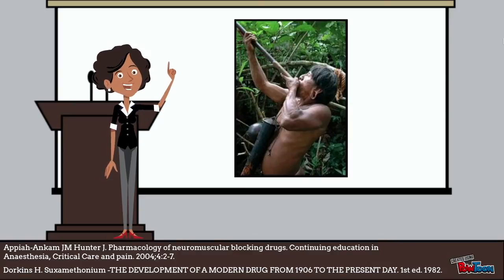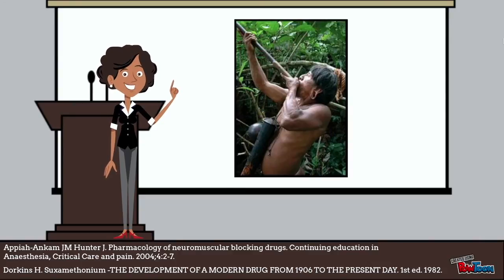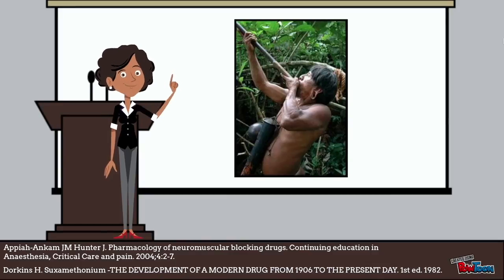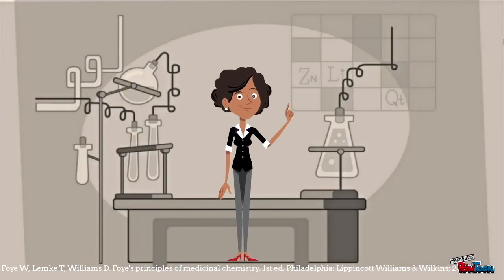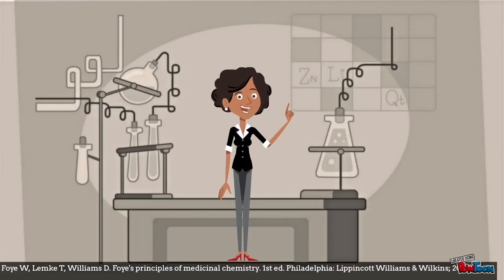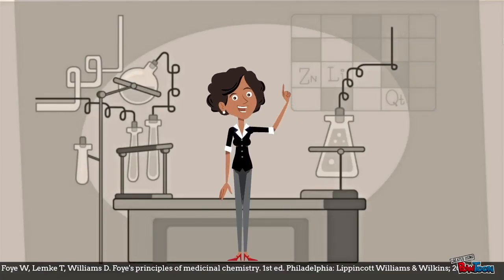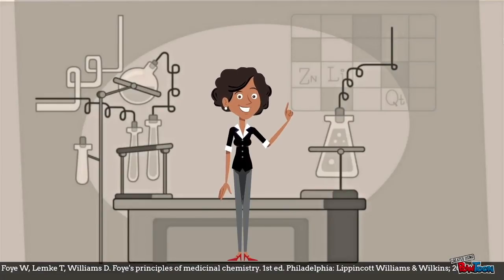Due to the fact that curare has almost zero oral availability, they did not end up poisoning themselves when eating the poisoned meat. As curare is made up of multiple components, the next step was to extract and purify individual excipients for neuromuscular blocking agents.